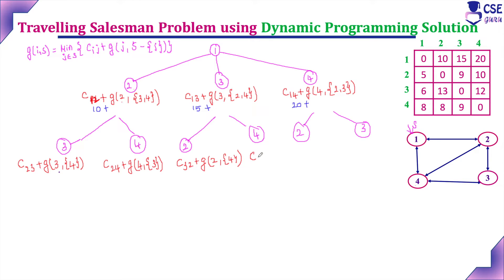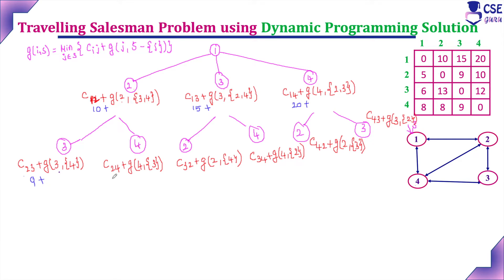For visiting 4 then 3: c(4,3) plus g(3, {2}); for visiting 4 then 2: c(4,2) plus g(2, {3}). The known costs are: c(2,3)=9, c(2,4)=10, c(3,2)=13, c(3,4)=12, c(4,2)=8, c(4,3)=9.